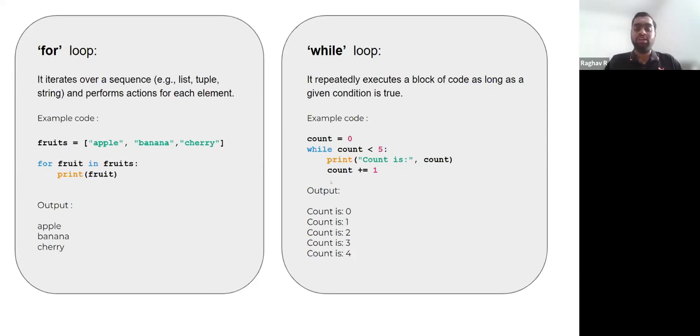So we will be iterating through count values zero, one, two, three, and four. When the count reaches five, the condition is no longer satisfied, so we will break out of the loop.